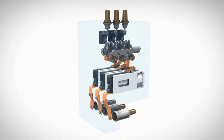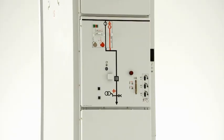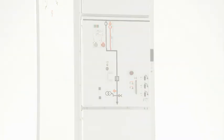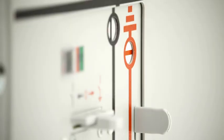Here the choose and execute principle ensures faultless operating sequences. Choose and execute means that the three position disconnector can generally be operated only when the circuit breaker is in the open position.